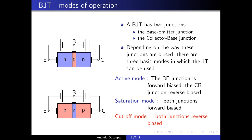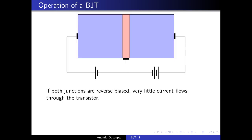Now let me explain the behavior of the bipolar junction transistor. We will talk about an NPN transistor specifically. I have drawn a schematic with the emitter on the left, the base in the middle, and the collector on the right. In the diagram the emitter and collector look identical, but remember that in actual construction, the emitter is very strongly doped and much smaller than the collector.